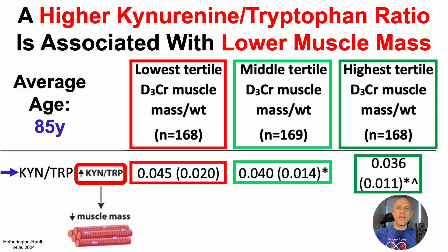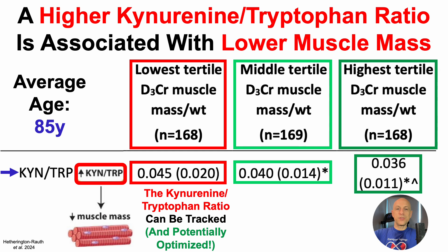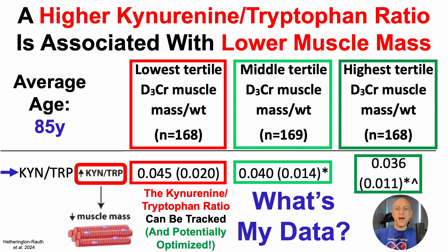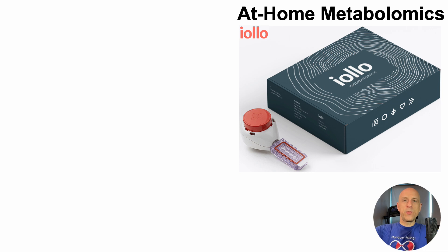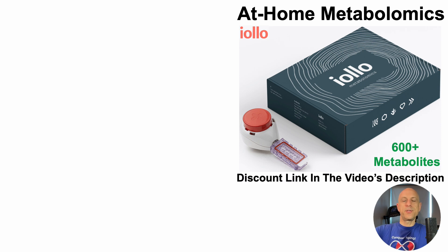Rather than just looking at this data in a published study, the good news is that this ratio can be tracked and potentially optimized. With that in mind, I've been sending blood using at-home metabolomics with Iolo's metabolomic kit. Besides kynurenine and tryptophan, it includes data for 600 other metabolites. If you want to use it yourself, there's a discount link in the video's description.